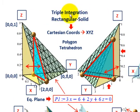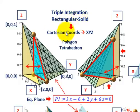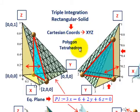What we're going to be going over here is a triple integral of a rectangular solid, and we're going to be doing it in Cartesian coordinates — that is x, y, z coordinates — and we're going to be looking at a simple polygon as a tetrahedron.